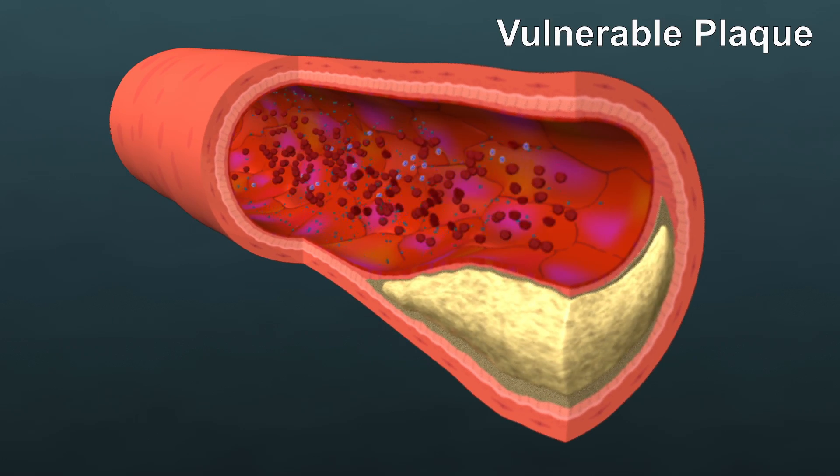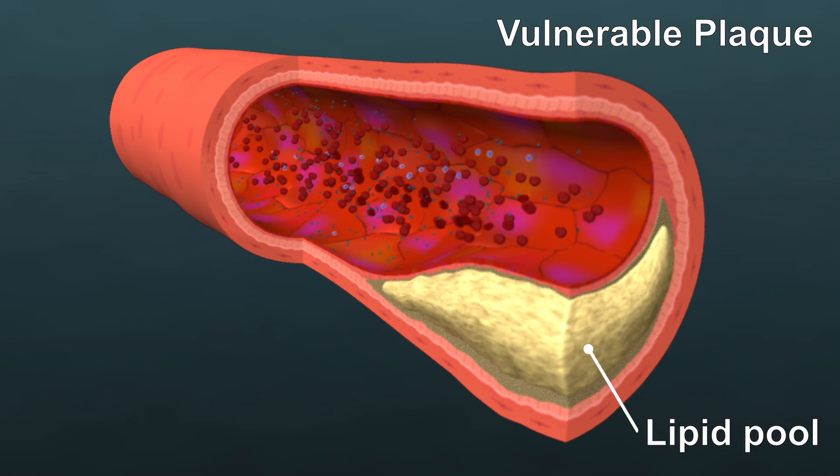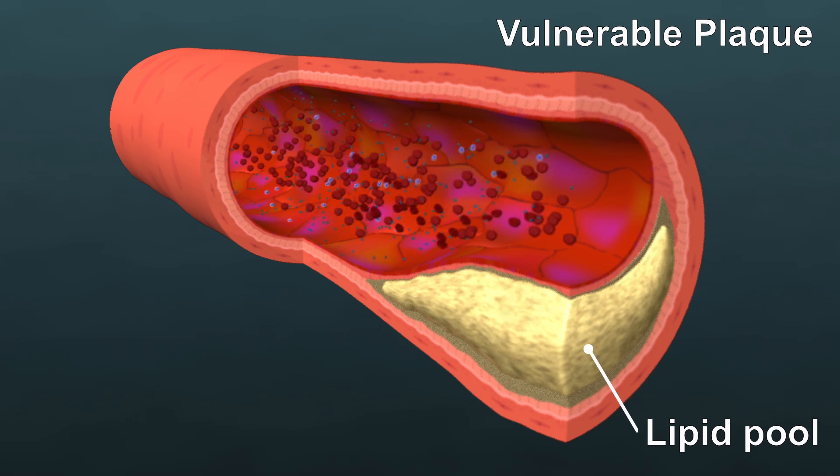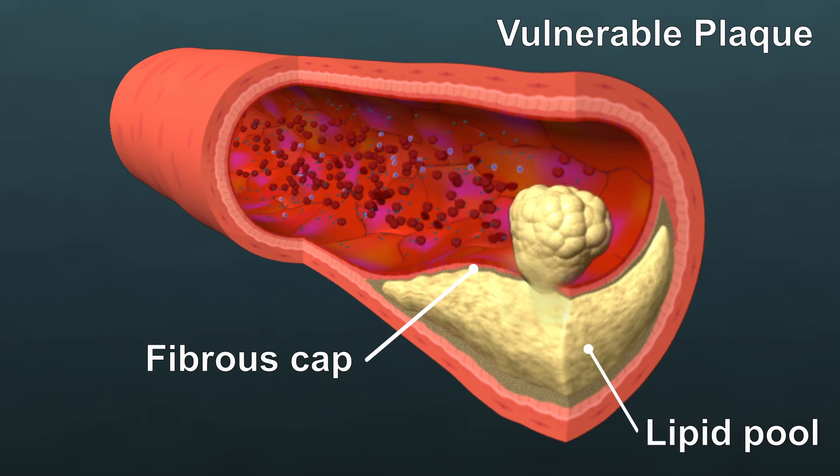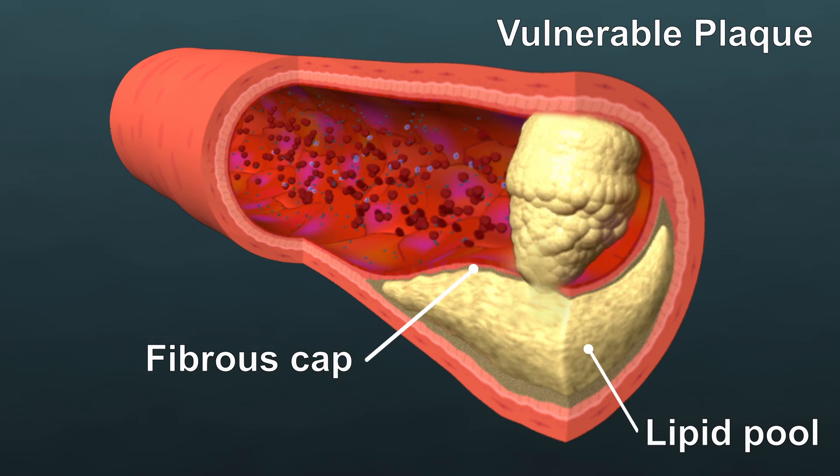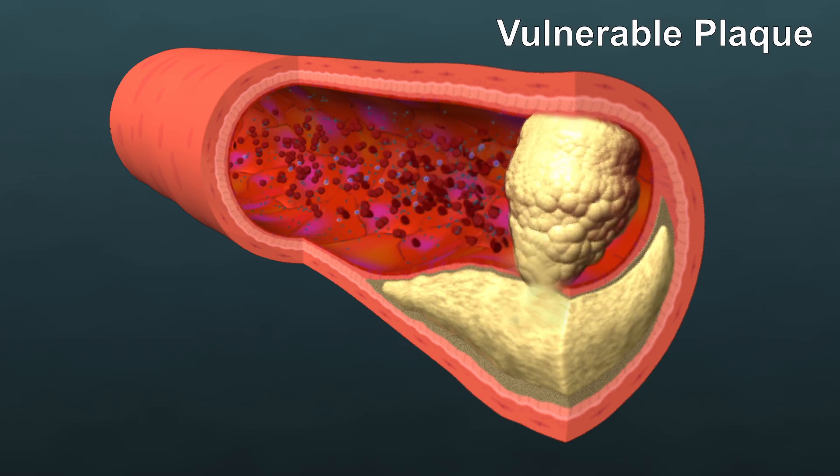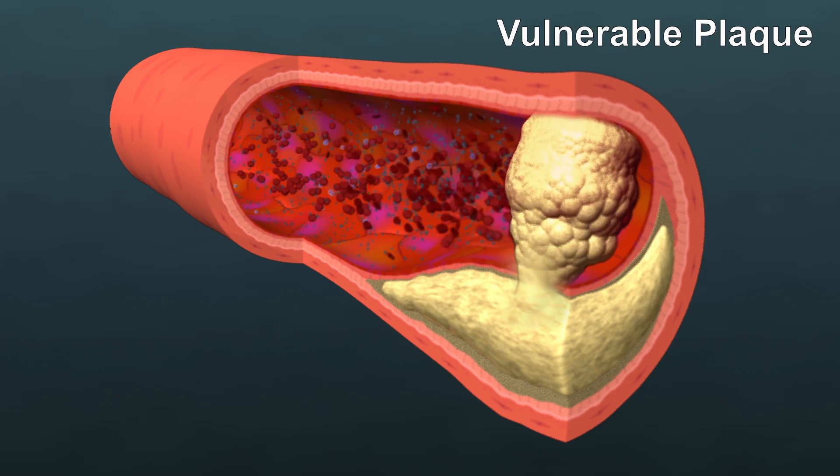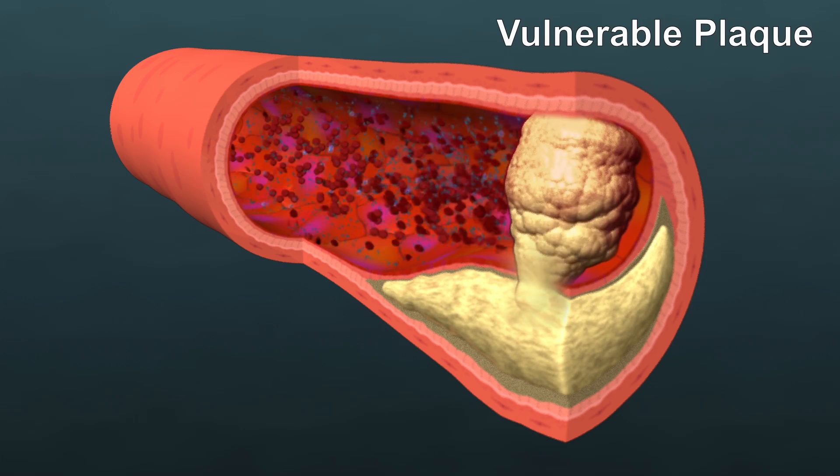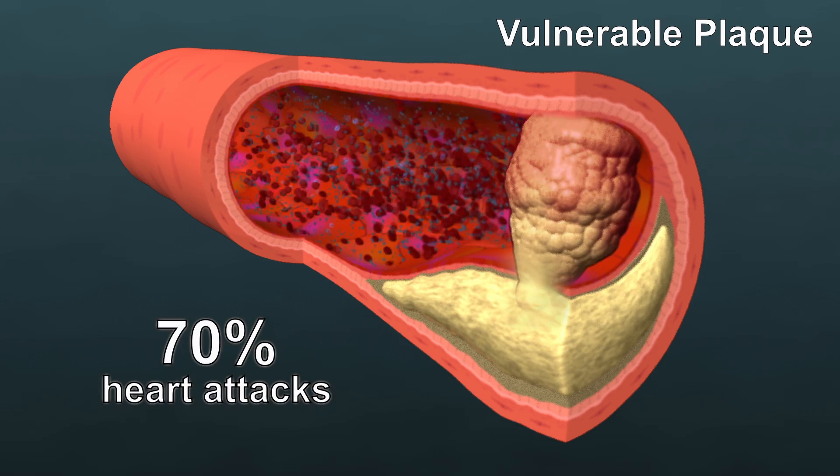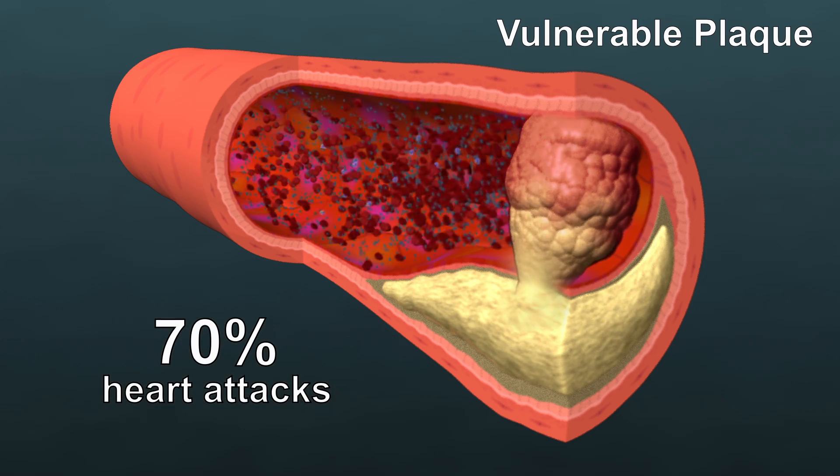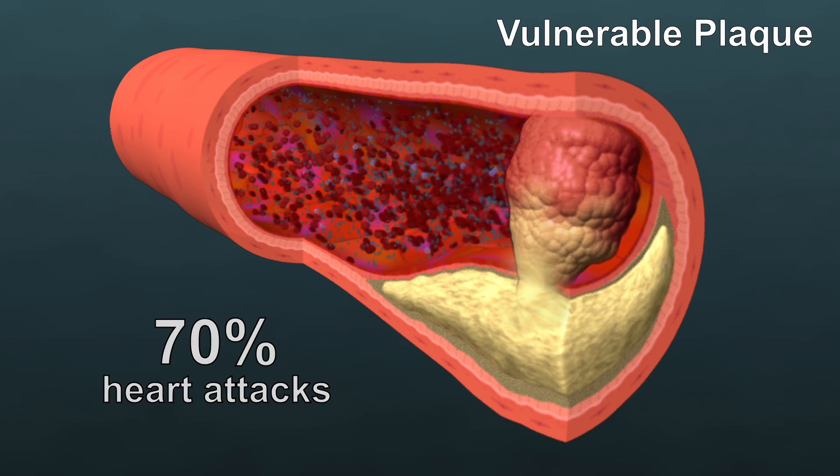A vulnerable plaque is a lipid pool within the artery, separated from the bloodstream by a thin fibrous cap. If the cap ruptures or erodes, the plaque contents are released into the bloodstream, and blood clots quickly form, causing blockage of an artery. Approximately 70% of heart attacks are attributed to vulnerable plaques.